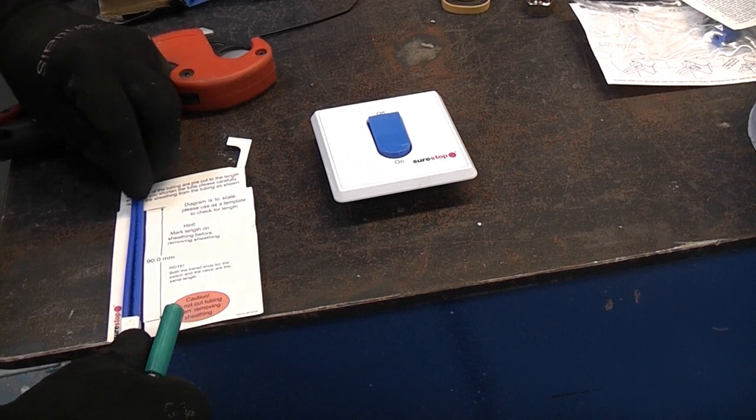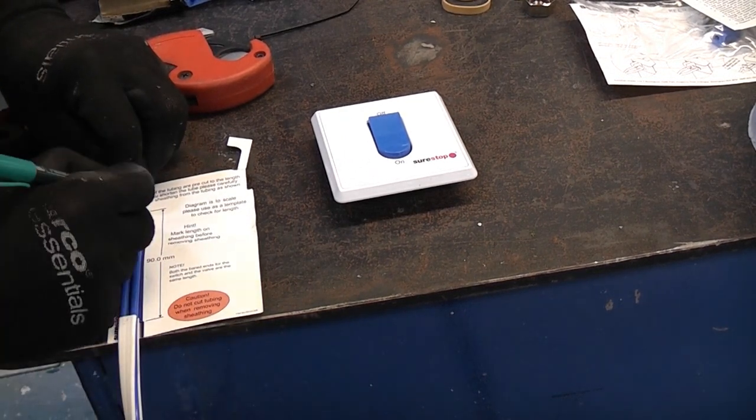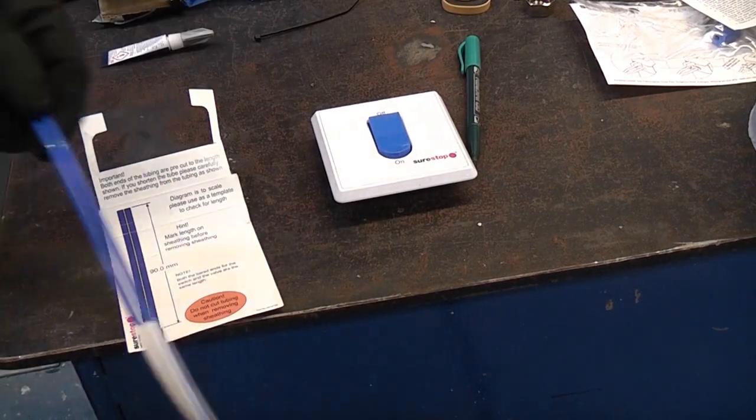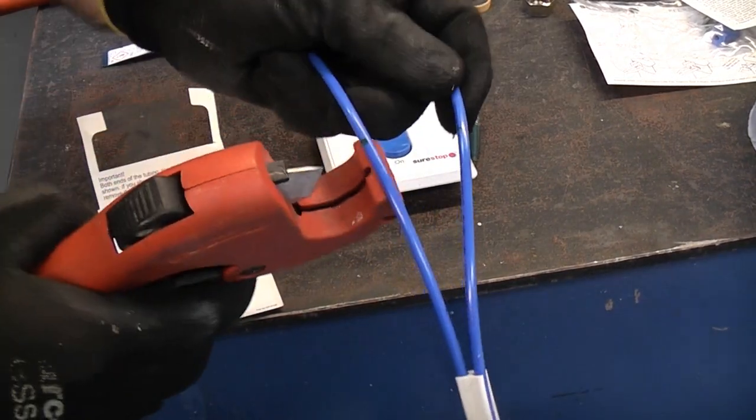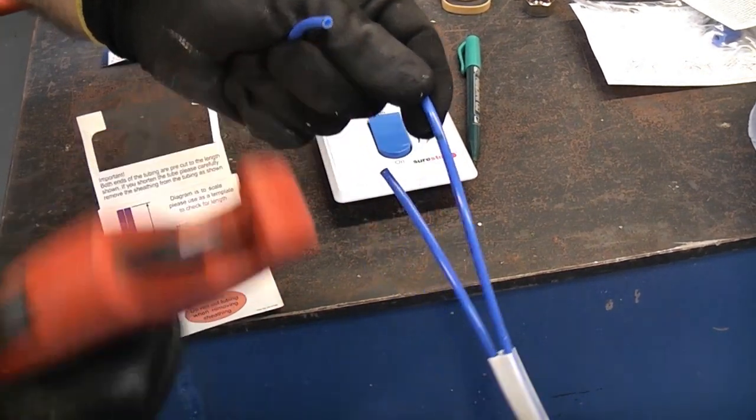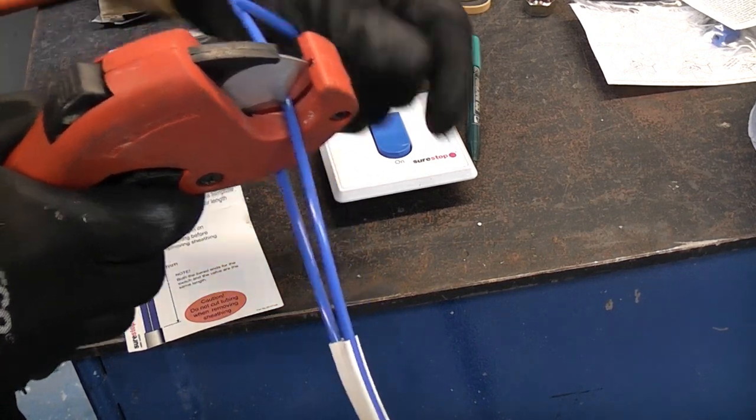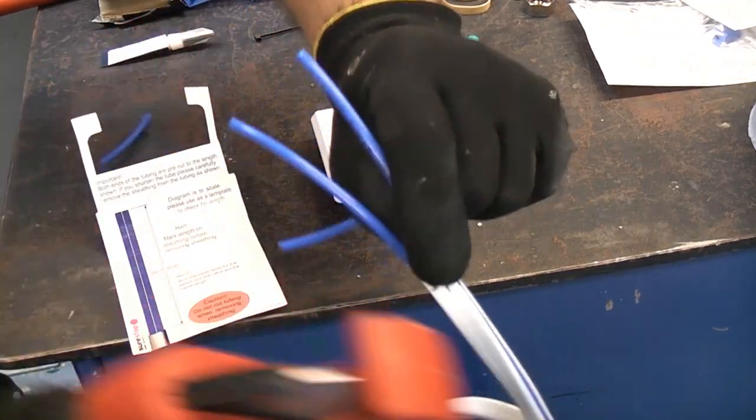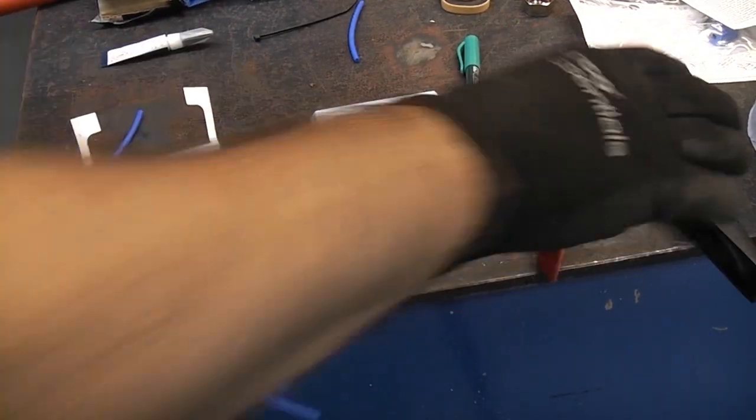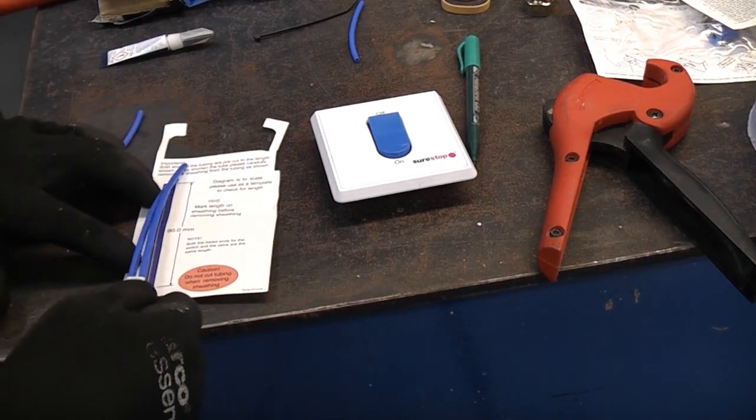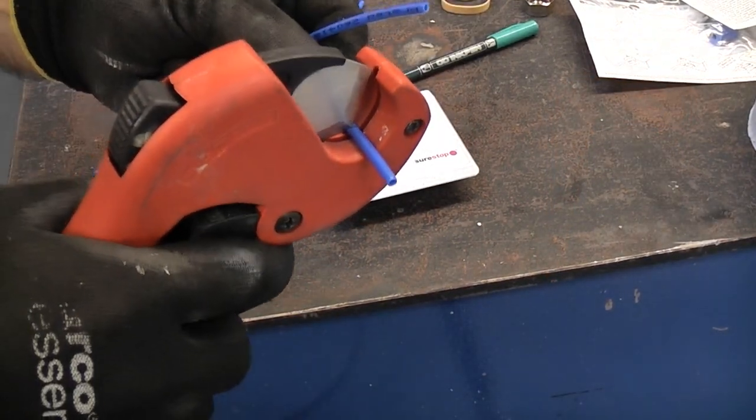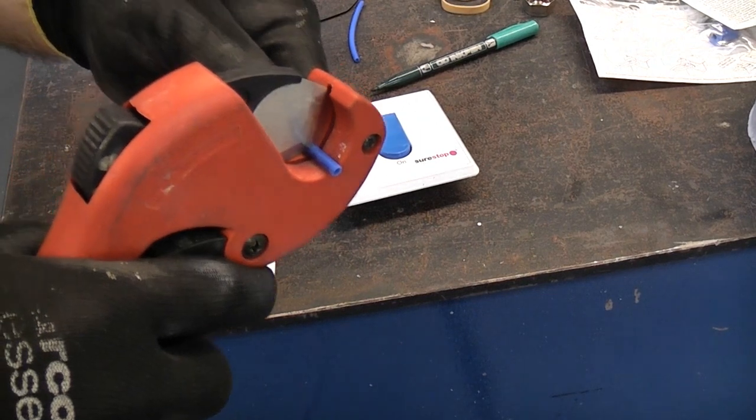So we're just going to put that on there and we'll just mark both of those at 90mm. Then we'll just cut those using a plastic pipe cutter. You can of course conceal this in partition walls should you wish to do so, or you can surface mount it. I'm going to mark those at 90mm and then trim those off.